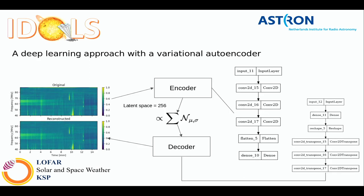As a first and very preliminary attempt, we created a Variational Autoencoder (VAE). Our goals were: first, to simplify the representation — can we represent the dynamic spectrum with a smaller set of parameters? Second, can we somehow learn the RFI effect on the data and subtract it? And finally, using the smaller latent space, can we cluster events and images to make categorization easier for users?